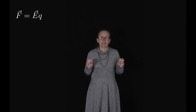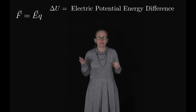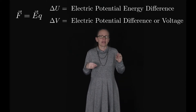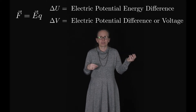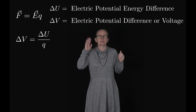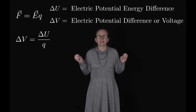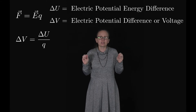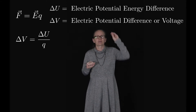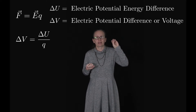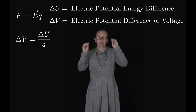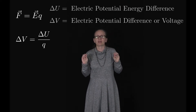There is actually a similar relationship between the electrical potential energy ΔU and the electrical potential, which is often called the voltage. The voltage difference, represented by the symbol ΔV, between two points is related to the electrical potential energy difference ΔU through the equation ΔV = ΔU / q, where q is the charge moving between these two different points.